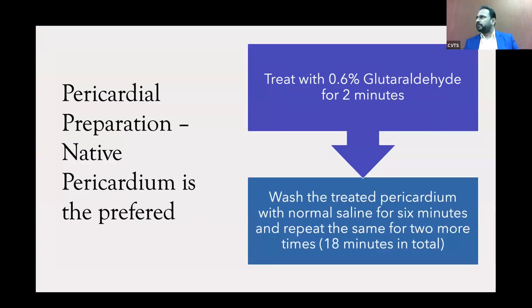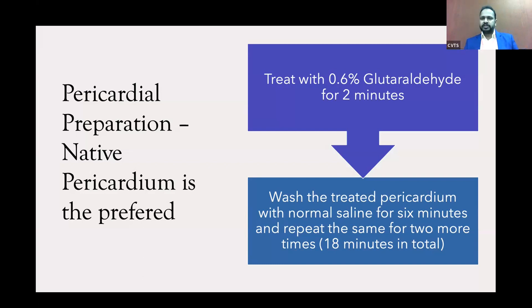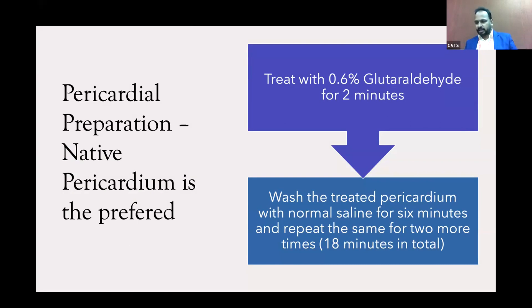After sternotomy, harvest the pericardium and treat it. In children or young adolescents, treat with glutaraldehyde for two minutes — that is more than enough. In patients above 65 or 70, the pericardium is very thin so we treat it for about eight minutes. After treatment, wash out all the glutaraldehyde with three separate saline washes, each lasting about six minutes. So essentially within 20 minutes, the pericardium is ready — by the time the surgeon opens and harvests pericardium and goes on pump, the pericardium is already prepared. An assistant or PA in the theatre can do this.